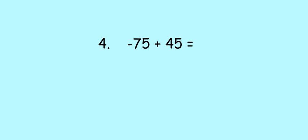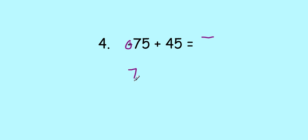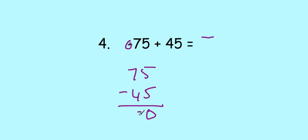Number four — different signs again. We've got a negative and then a positive. We have 75 negatives and 45 positives, so we have more negatives — we put that negative sign in our answer. Different signs difference, so we do 75 minus 45: 5 take away 5 is 0, 7 take away 4 is 3. Our answer is negative 30.